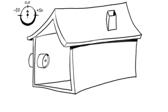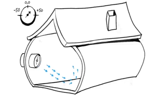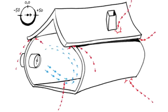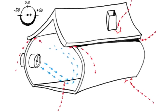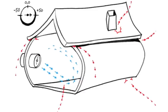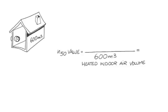Then the fan conveys outside air into the structure and generates a positive pressure of 50 Pascal. This corresponds almost to wind force 5. The more air escapes to the atmosphere through leaks, the more air must be conveyed by the fan and the higher is the air change rate, the N50 value. The value is indicated in the display. It is called V-leckage, volume flow through the leaks. This volume flow is determined for one hour.